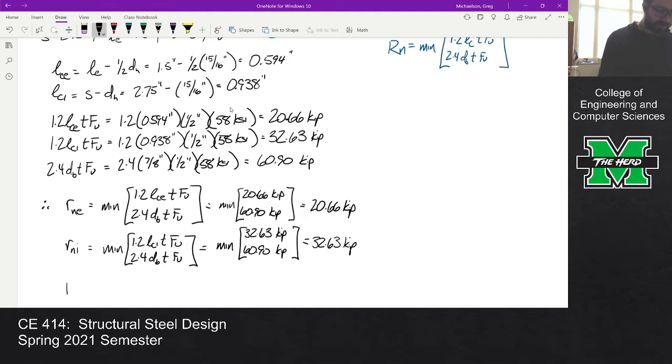For our capacity of the whole connection, remember we have two edge bolts and two interior bolts. So rn is 2*rn_e plus 2*rn_i, which is two times 20.66 plus two times 32.63. When you check that out, you get 106.58.